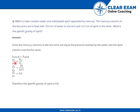Rearranging, we get ρ_s / ρ_w = h_w / h_s. Substituting the given values of h_w = 10 cm and h_s = 12.5 cm, the ratio ρ_s to ρ_w equals 0.8. By definition, this ratio is the specific gravity, therefore the specific gravity of spirit is 0.8.